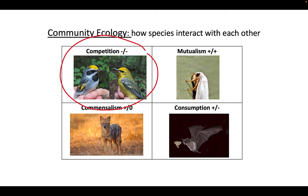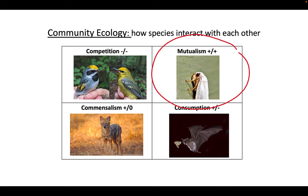We spent the first half of this lecture looking at competition among species, which is a minus-minus interaction, negative for the fitness of both species. In the second half of the lecture, we'll focus on the other three interactions, and we'll start off with mutualism, which is a plus-plus interaction, positive for the fitness of both species.